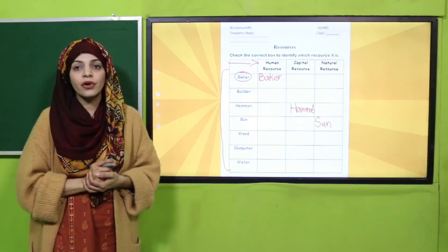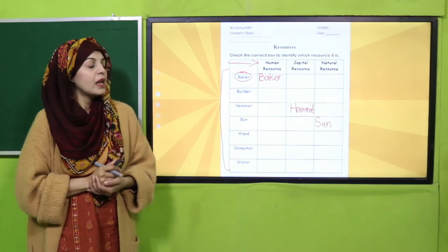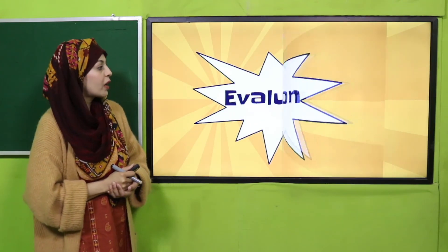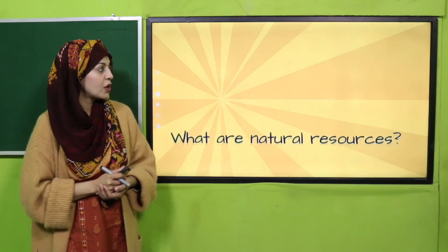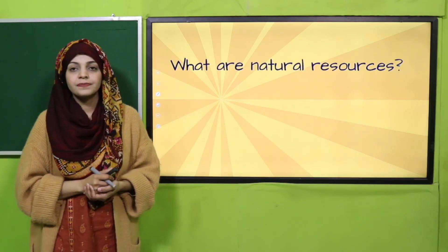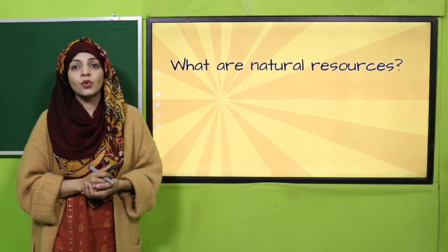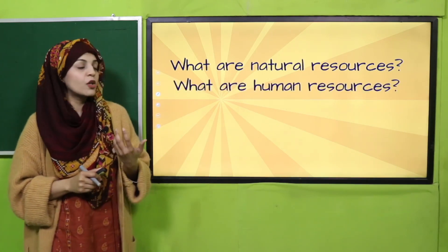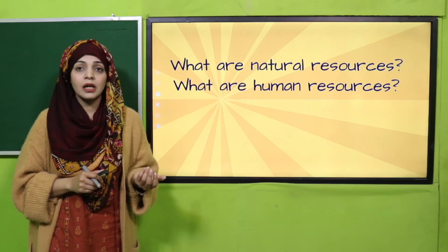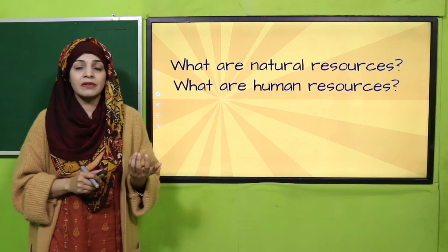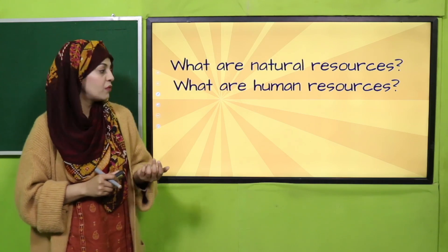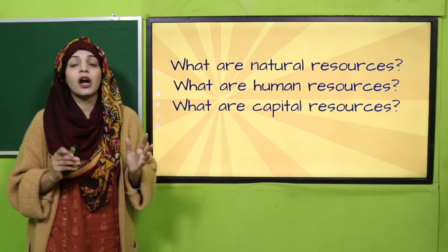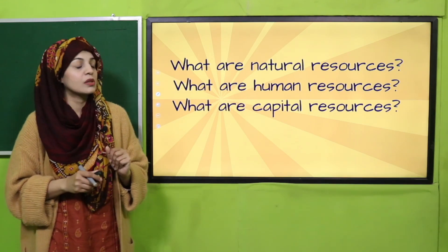For evaluation, answer these questions: What are natural resources? The resources that exist around us naturally are called natural resources. What are human resources? The different services or activities provided by people are called human resources. What are capital resources? Different things or goods which are made by humans are called capital resources.